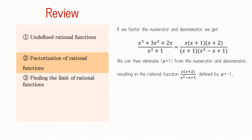Next, looking at the factorization of rational functions: the numerator and denominator of f(x) both become zero when negative 1 is substituted for x. Therefore, if we factor both the numerator and denominator, we find that f(x) has a factor of (x + 1).